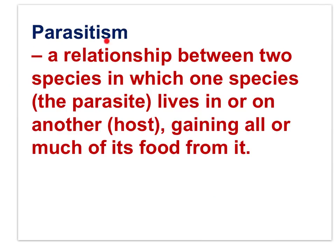Parasitism is defined as a relationship between two species in which one species lives in or on another, gaining all or much of its food from it. A disease is defined similarly — it's one species, the pathogen, that lives in or on another, the host, gaining all or much of its food from the host.